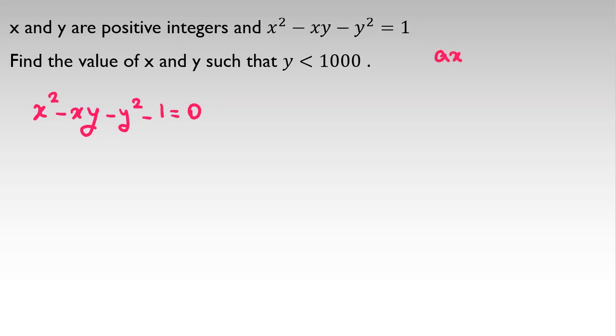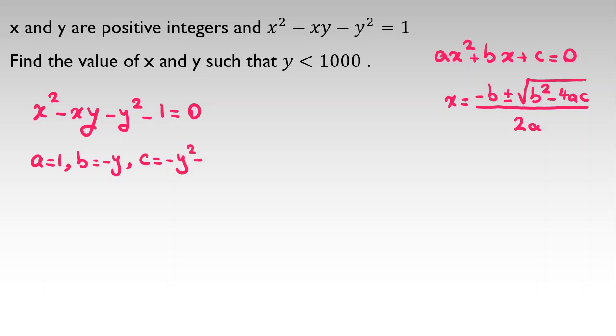The formula for quadratic function is if ax² + bx + c = 0, then x is -b ± √(b² - 4ac) all over 2a. So if I find x in terms of y here, I can say a is 1. In terms of x quadratic formula, b is -y and c is -y² - 1.